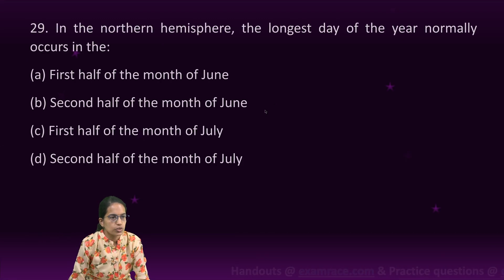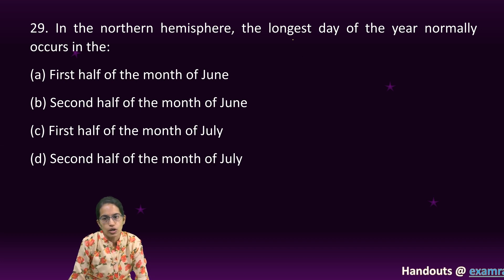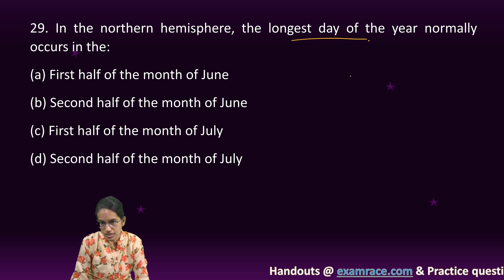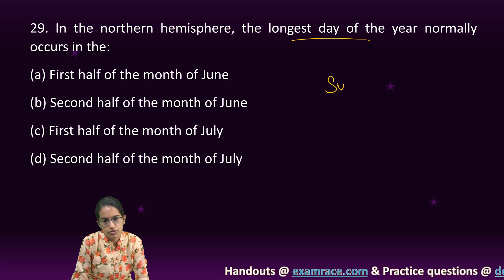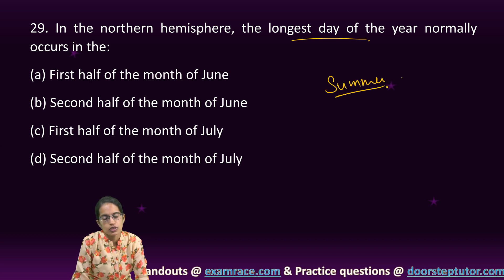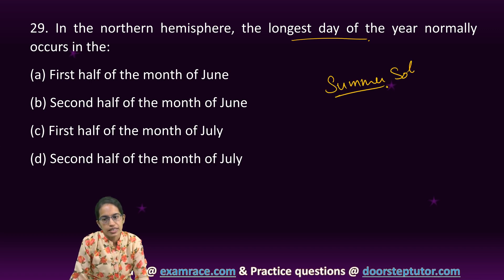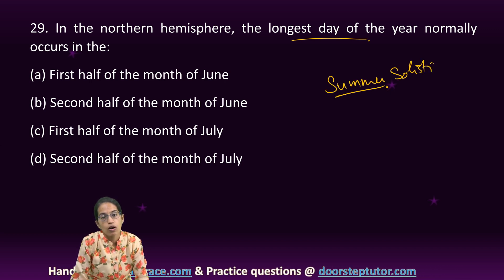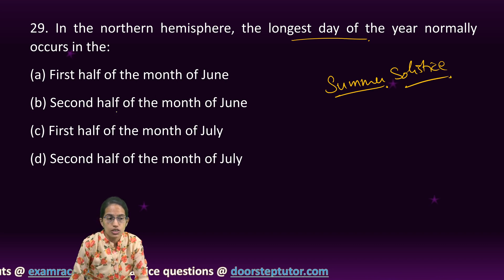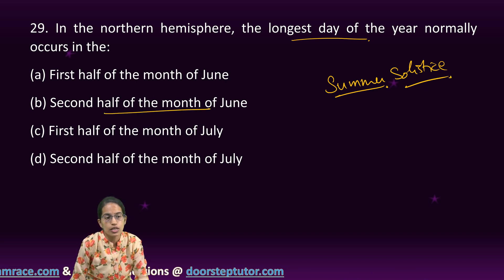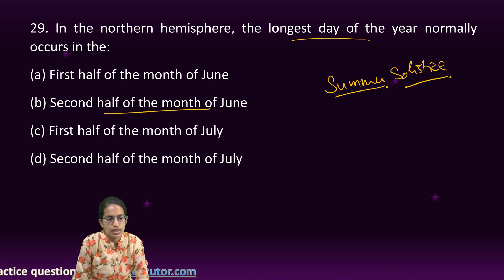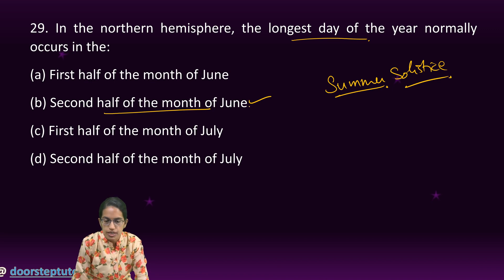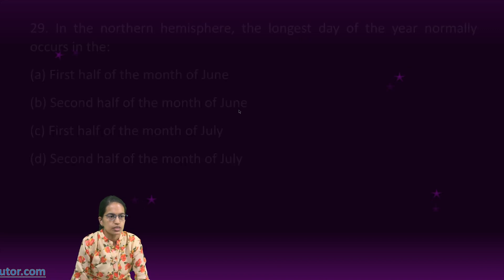The next question about the Northern Hemisphere is very direct — basically NCERT Class 6 level. The longest day in the Northern Hemisphere is the summer solstice, which occurs on June 21st. So the second half of the month of June would be the right option for this question.